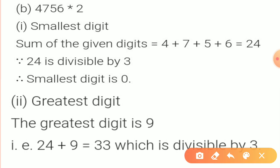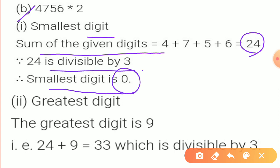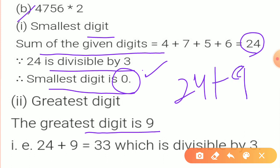Part B: the sum of all the digits is 24, which is already fully divisible by 3. So the smallest digit will be 0. For the greatest digit: 24 plus 9 = 33, which is divisible by 3. So the greatest digit will be 9. Smallest is 0 and greatest is 9.